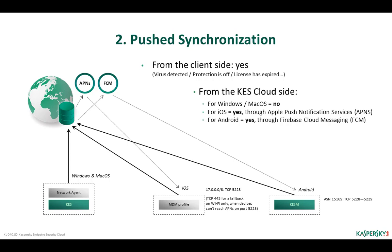Pushed synchronization is not available for Windows or Mac workstations and servers — only Android and iOS devices can forcibly receive commands. iOS mobile devices synchronize via Apple Push Notification Service (APNs), a service developed and supported by Apple that sends commands to devices. Android devices can also receive pushed commands from Kaspersky Endpoint Security Cloud server, provided by Firebase Cloud Messaging (FCM) technology — the APNs counterpart for Android, developed and supported by Google.